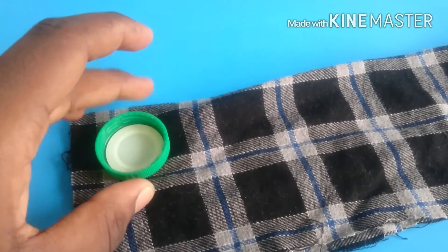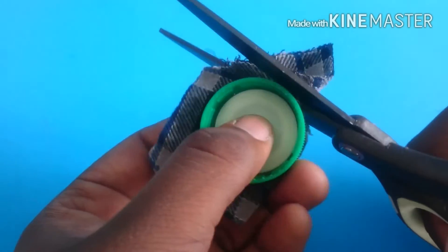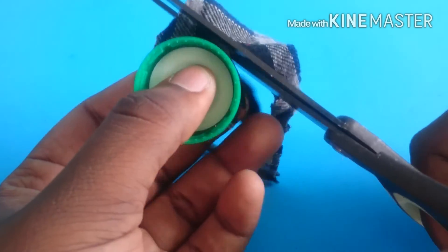Now for a stool, I'm going to take a bottle cap, then glue it onto some fleece. Then I'm going to trim off any excess fabric.